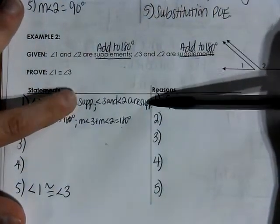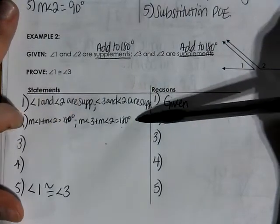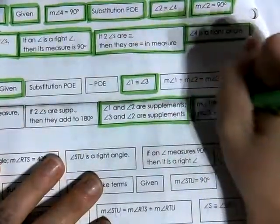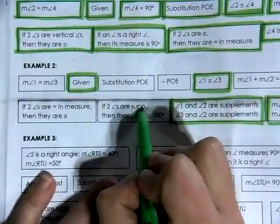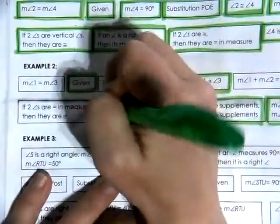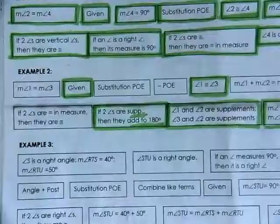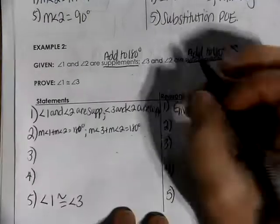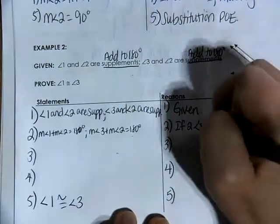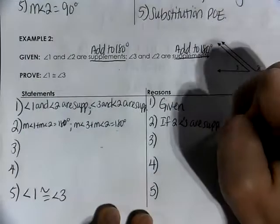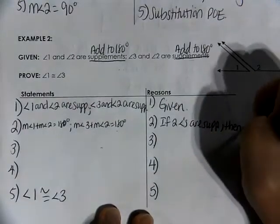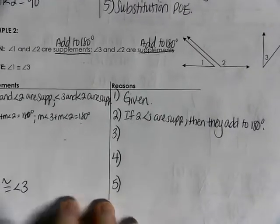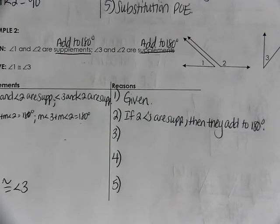Why do I write this? What came before was supplementary angles, and what came next is they add to equal 180 degrees. So I'm going to write that the measure of angle one plus the measure of angle two equals 180, and the measure of angle three plus the measure of angle two equals 180. The reason is: if two angles are supplementary, then they add to equal 180 degrees.